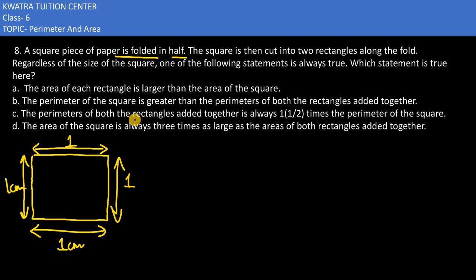They are saying folded in half. What does this mean? Rectangle 1 is there and rectangle 2 is there. Half is there, half is there. This is half, this is half as well.